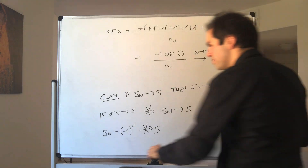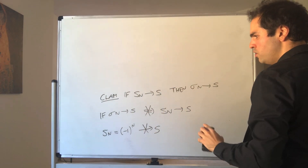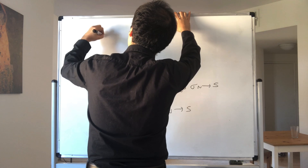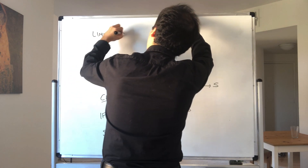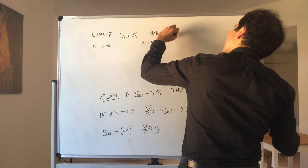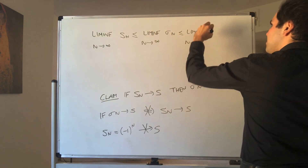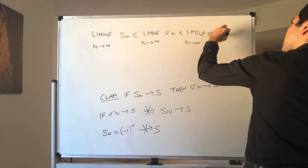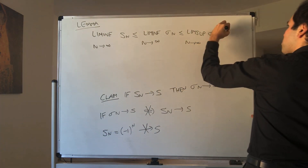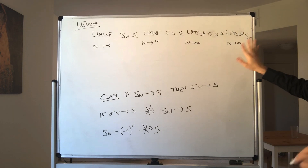That said, we can still show this. In order to show this, we need to show the following identity that's very useful with lim sups and everything. We show that lim inf as n→∞ of Sn ≤ lim inf as n→∞ of σn ≤ lim sup as n→∞ of σn ≤ lim sup as n→∞ of Sn. Once we have shown that, then we're done.